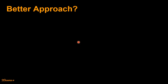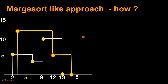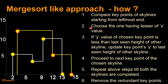It turns out there is an approach which uses a merge sort-like procedure to solve this skyline problem. It runs in time complexity of n log n. In this approach, we basically need to merge the given two skylines. Let's look at an algorithm which describes the merge procedure for two given skylines. The first step is we compare key points of skylines starting from the leftmost end.